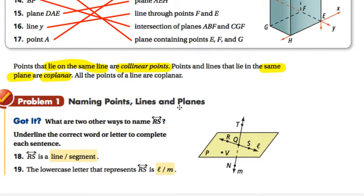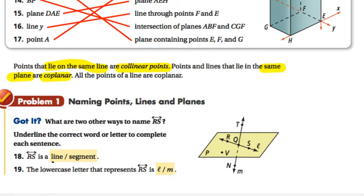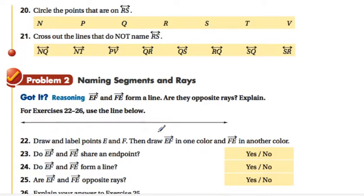This says, what are two other ways to name line RS? So here's line RS. Underline the correct word or letter to complete the sentence. RS is a line or a segment. Well, it is definitely a line. The lower case letter that represents line RS is line L. That one is line L.